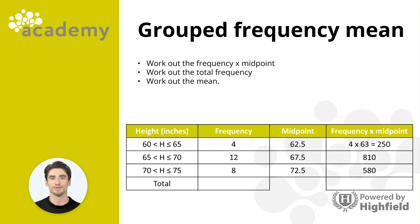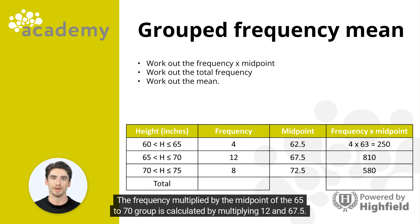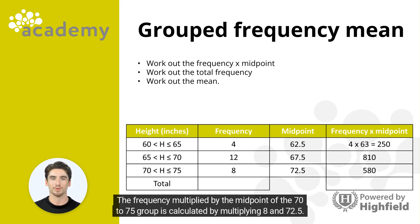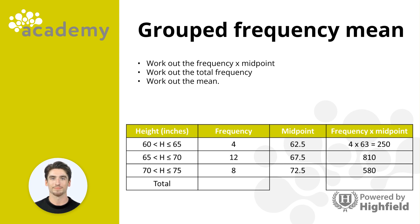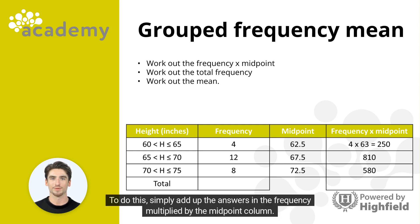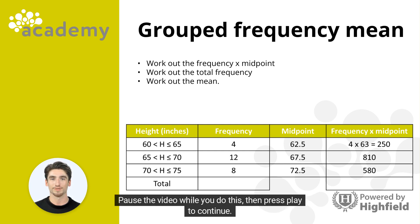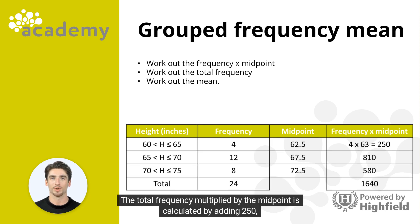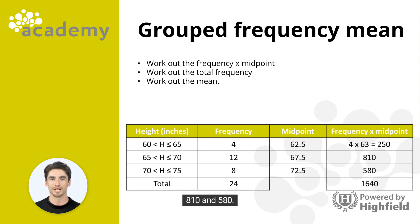Let's take a look. The frequency multiplied by the midpoint of the 65 to 70 group is 12 multiplied by 67.5, giving 810. The frequency multiplied by the midpoint of the 70 to 75 group is 8 multiplied by 72.5, giving 580. We also need to calculate the total frequency multiplied by the midpoint by adding up all values in that column: 250 plus 810 plus 580 gives a total of 1640.